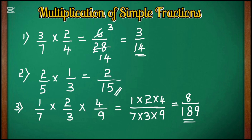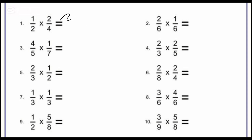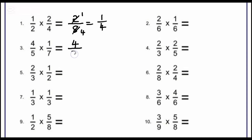This is how we can do multiplication of fractions, whether they are proper or improper fractions. For example, 1/2 × 2/4 gives 2 in the numerator and 8 in the denominator; after simplifying 2/8 we get 1/4. The next question is 4/5 × 1/7; multiplying the numerators gives 4 and multiplying the denominators 5 × 7 gives 35, so the answer is 4/35.